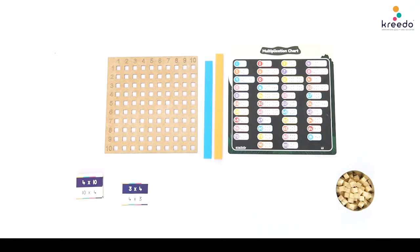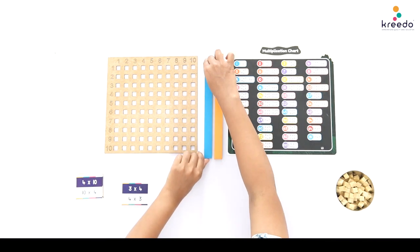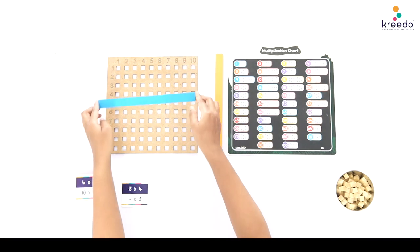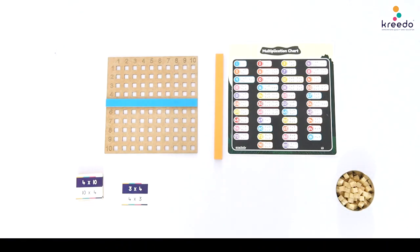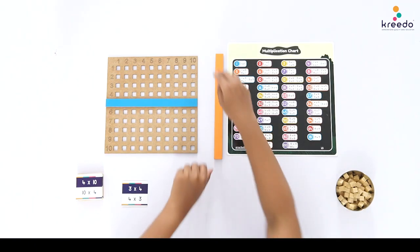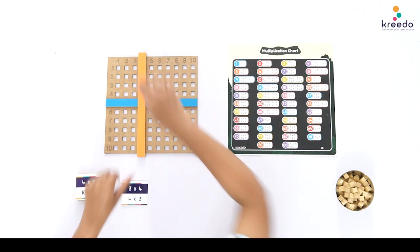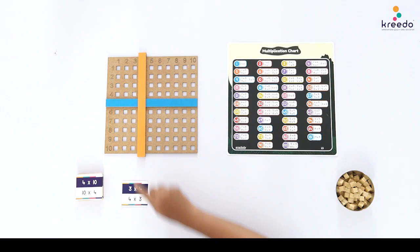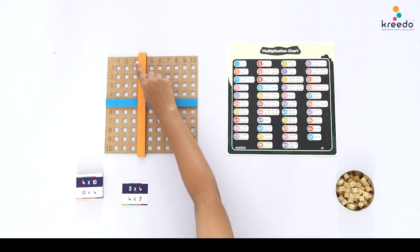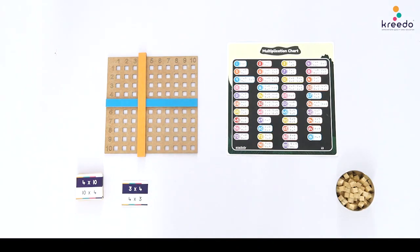Tell the child: let us read the other fact on the card — 4 times 3. Place the blue strip horizontally below the number 4. Point to the number 4 on both the card and the board and say 4. Place the orange slider vertically, covering the number 3. Point to the number 3 on both the card and the board and say 3.